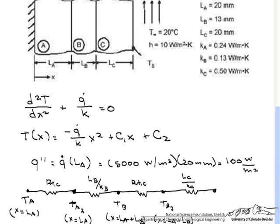And when we are finished going through C, we are at the surface. So that's our surface temperature. And finally, we have our convective resistance and our final temperature T infinity.